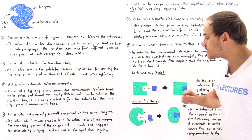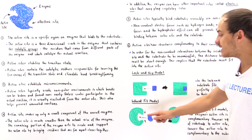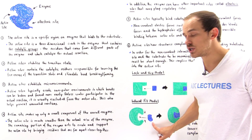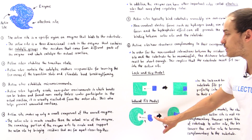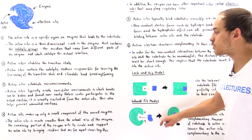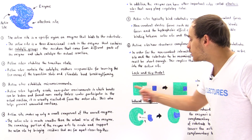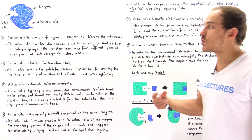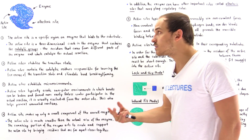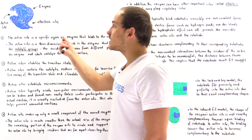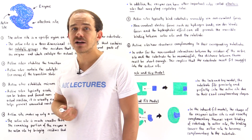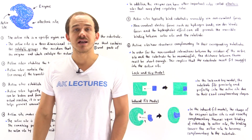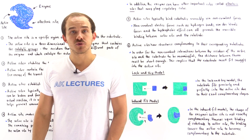The substrate becomes complementary to the active site, and the active site becomes complementary to that particular substrate. It is this induced fit model that correctly describes the way binding actually takes place between the active site of the enzyme and the substrate.